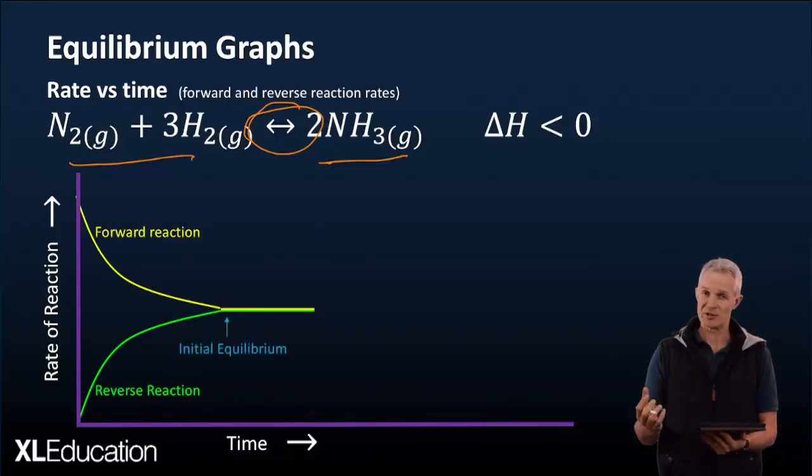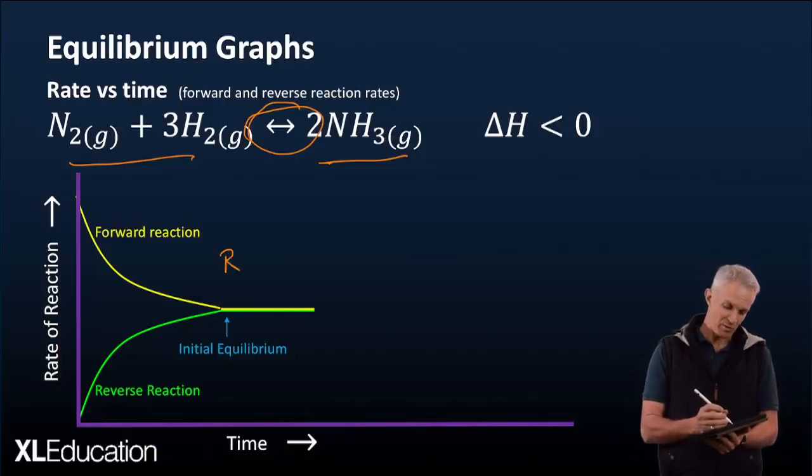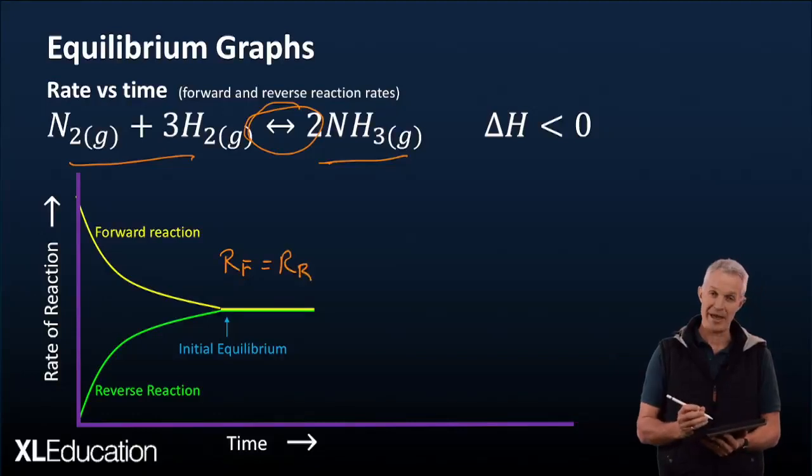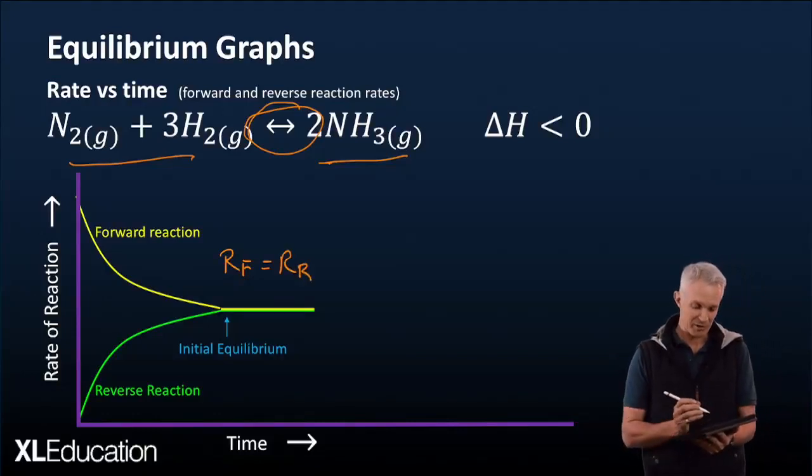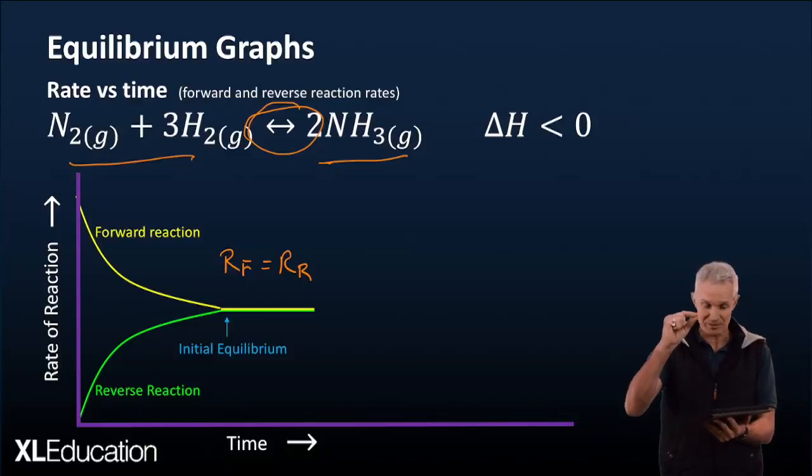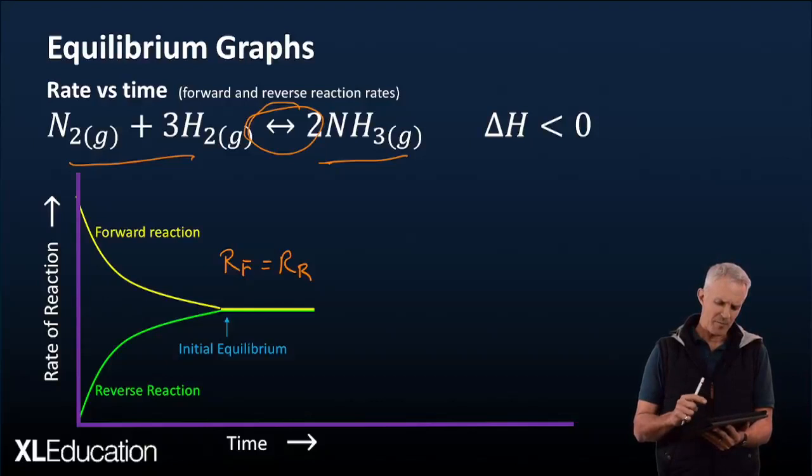Once again, the forward reaction slows down, the reverse reaction speeds up, and they have got to reach that point, of course, where the rate of the forward reaction is equal to the rate of the reverse reaction. That is dynamic equilibrium. And so those two lines actually meet in the middle this time, and that's where our equilibrium is formed. Now once again, let's consider the same disturbance to happen. We're going to add some more nitrogen. So at that time T, once again, we're going to add some more nitrogen.